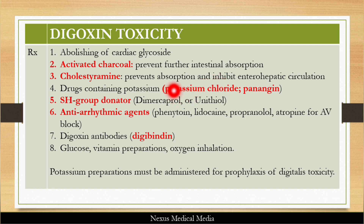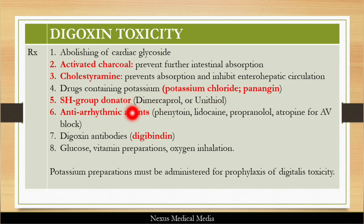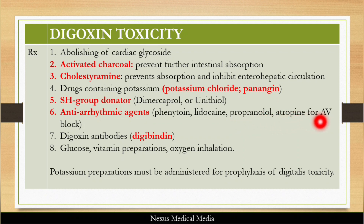You can give potassium-containing drugs like potassium chloride or Panangin. You can give SH group donors like dimercaprol and unithiol. Antiarrhythmic agents such as phenytoin, lidocaine, and propranolol can be used, along with atropine for AV block. You can also give digoxin antibodies like Digibind.